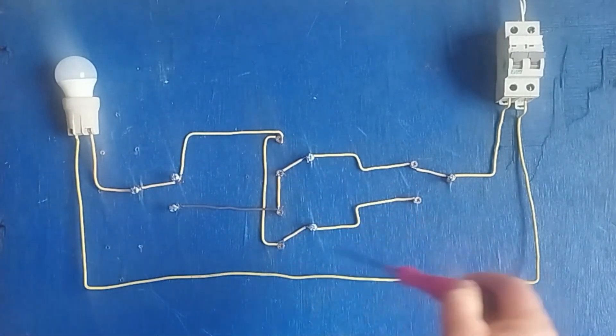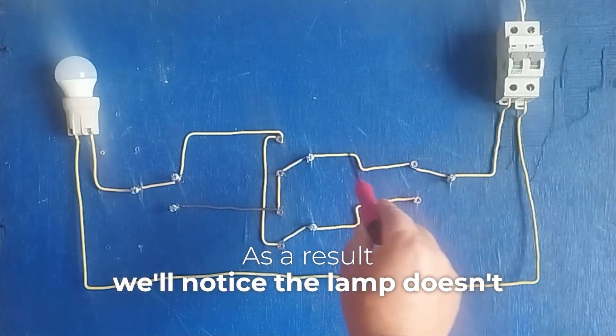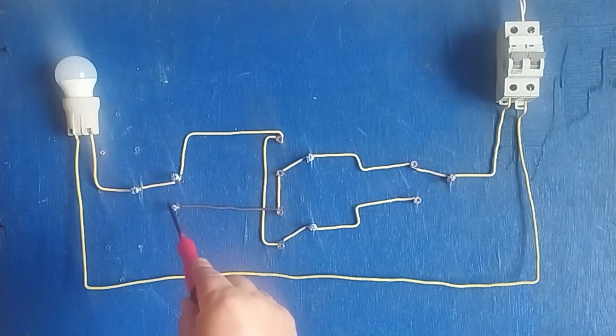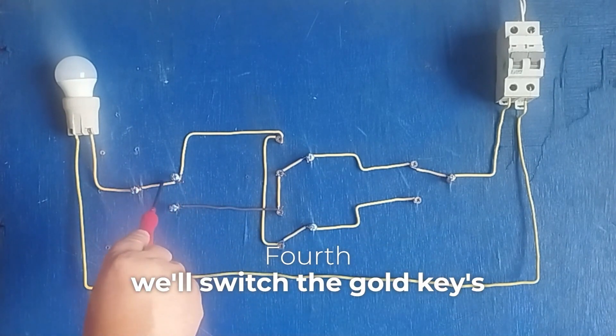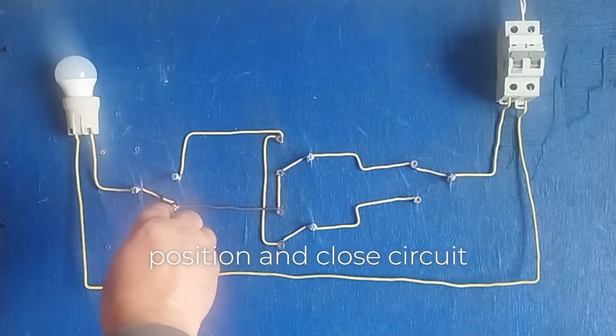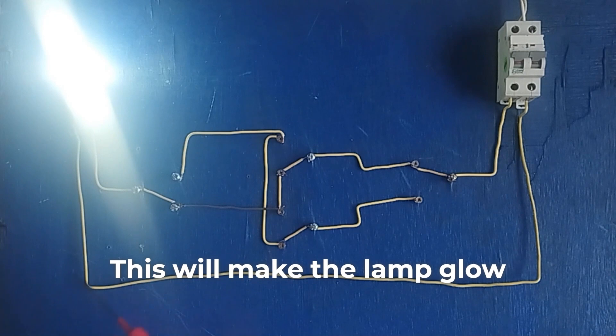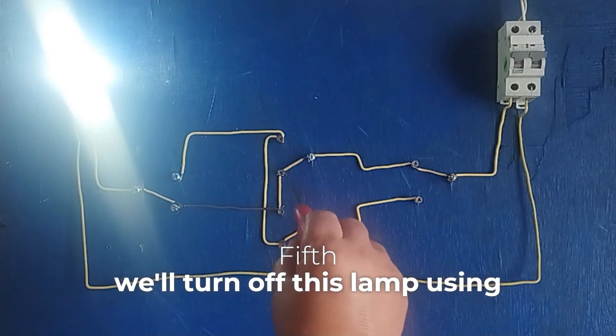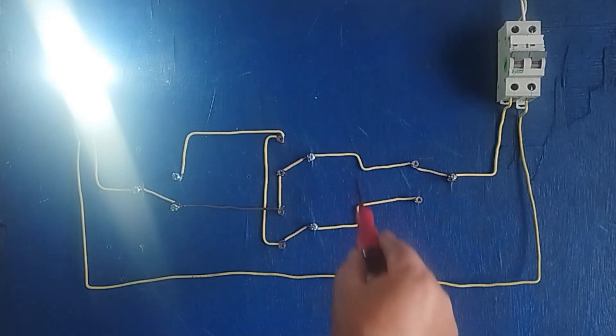As a result, we'll notice the lamp doesn't light up. Fourth, we'll switch the gold key's position and close circuit two. This will make the lamp glow. Fifth, we'll turn off this lamp using the switch.